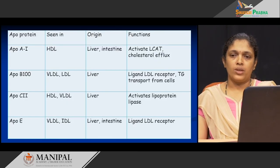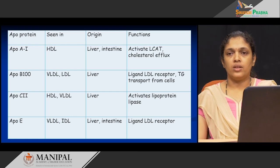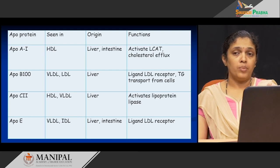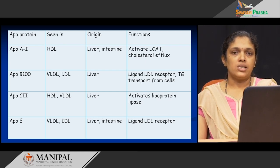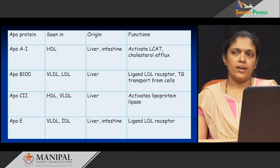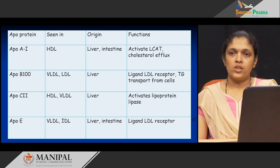Looking at the functions of these apoproteins: apolipoprotein A1 is part of the lipoprotein HDL — high density lipoprotein is a combination of a lipid and a protein, and the protein part of HDL is apo A1. Apo A1 is synthesized mainly in the liver and also in the intestine. Its function is to activate an enzyme called LCAT (lecithin cholesterol acyl transferase), thereby favoring cholesterol efflux. So apo A1 is both a structural component of HDL and an enzyme activator.